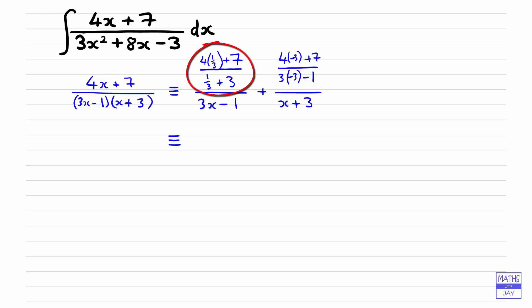So first of all, I think in the first one, I'd multiply numerator and denominator by the fraction on top by 3, so that we don't have all these fractions within fractions within fractions. So we've got 4 plus 3 times 7 is 21, and then 1 plus 3 times 3 is 9, so we've multiplied top and bottom of that fraction by 3, and then we'll still have the 3x minus 1. And the other fraction, simpler to work out, because we haven't got any fractions within it, we've got minus 12 plus 7, so that will be minus 5, and then minus 9 minus 1, so that's minus 10, and that's over x plus 3.